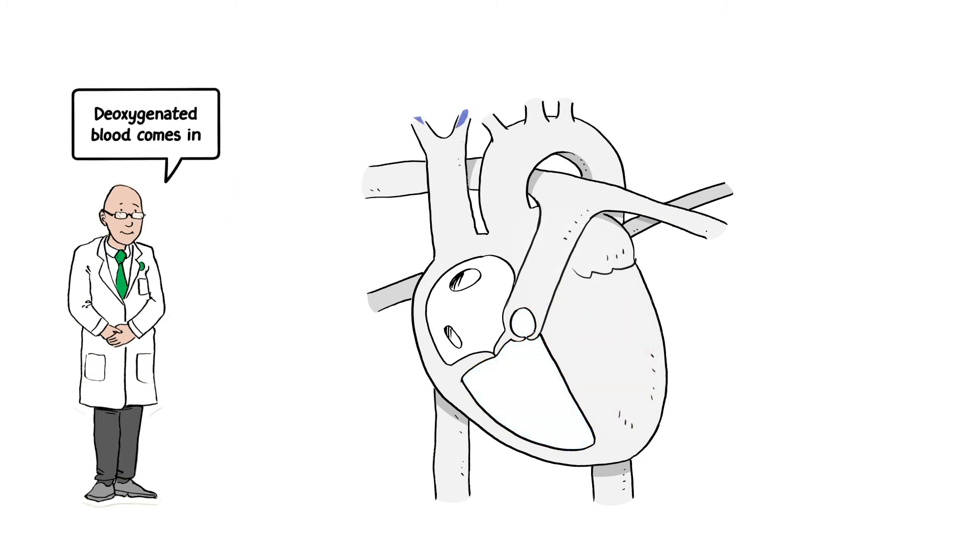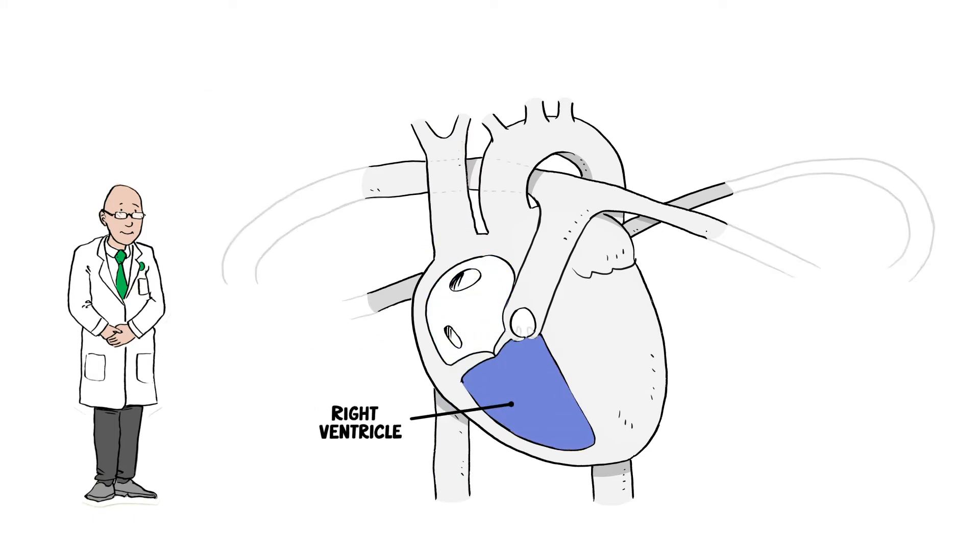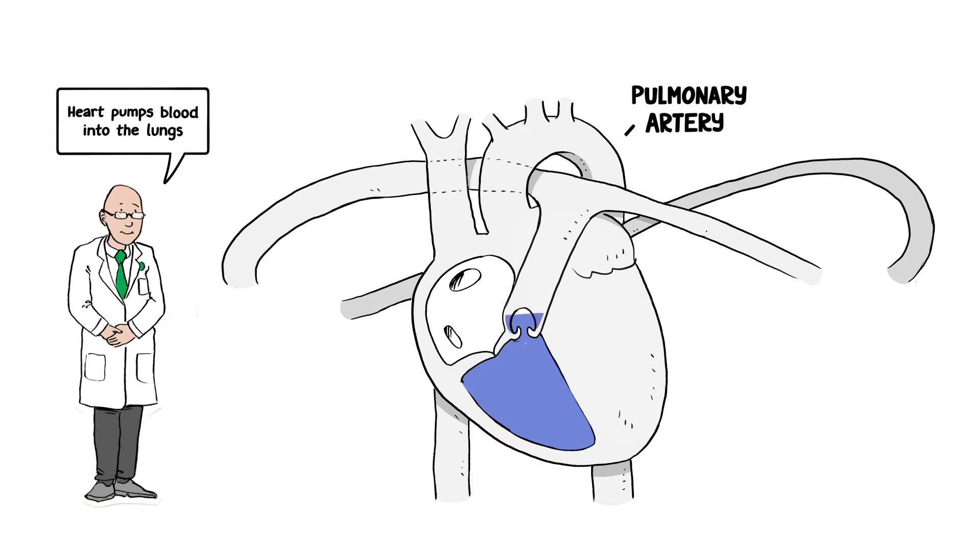Deoxygenated or blue blood returning from the body collects in the right atrium and then flows into the right ventricle. Once collected, the heart pumps that blood through the pulmonary artery and into the lungs, where it gains the oxygen it will transport back into the body.